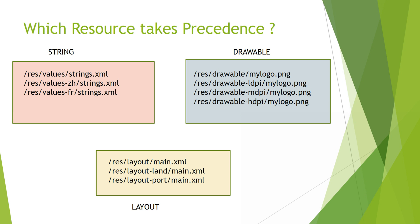If your device supports landscape mode, HDPI, and you want your application in Chinese, and if you have added all these alternative resources, the Resource Manager will be smart enough to load all the required resources automatically. Android has a very robust mechanism for loading appropriate resources at runtime. You just define them in your application and leave everything to the Resource Manager — it will take care of displaying in that particular mode.